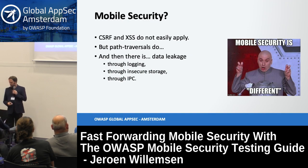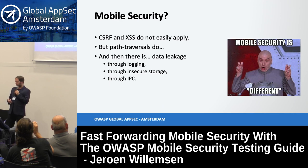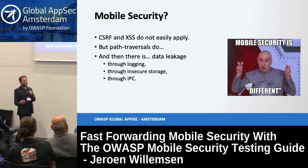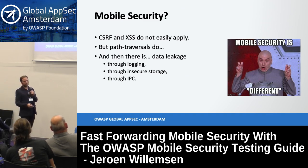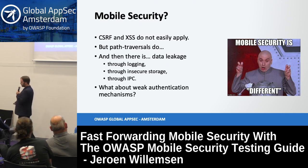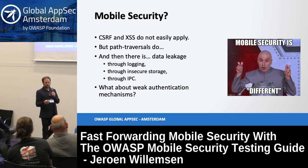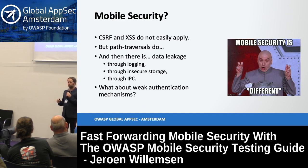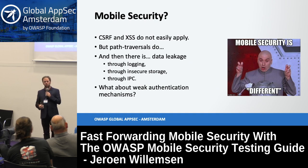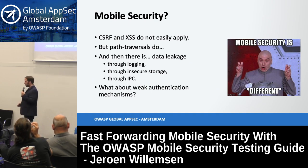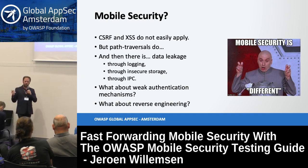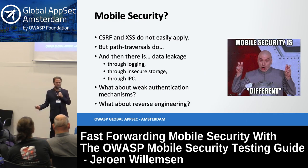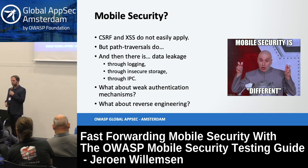What about data leaking through logging — logcat or iOS logging output? Insecure storage because you thought using the SD card was a good idea? IPC — app extensions sharing data the wrong way, intent sniffing, extra data that shouldn't be there? And what about weak authentication mechanisms? There's been a long period where you could get an AppSec speaking slot just by breaking something open and showing how broken a mobile app was. And then reverse engineering — all that logic is on the client side now, making it hard for an attacker.